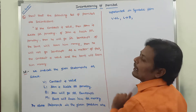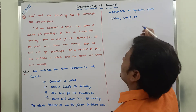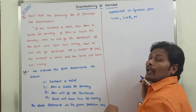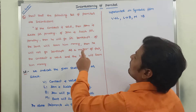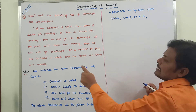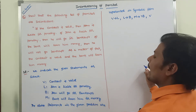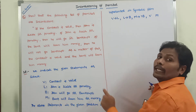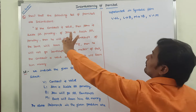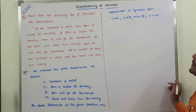Next: if the bank will loan him money, denoted by M, then he will not go for bankrupt, denoted by ¬B. The if-then connective gives us the conditional symbol, so this is M → ¬B. Next: as a matter of fact, the contract is valid — denoted by V — and the bank will loan him money — denoted by M. In between them the and-connective is there, so this premise is V ∧ M. These are the given premises obtained from the given statements.